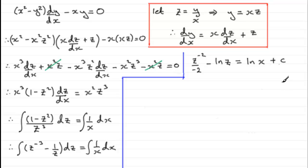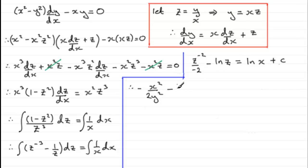We need our answer in terms of x and y, so we substitute z = y/x. The term z⁻²/(−2) becomes minus x²/(2y²). We also have minus ln(y/x) equals ln(x) plus c.